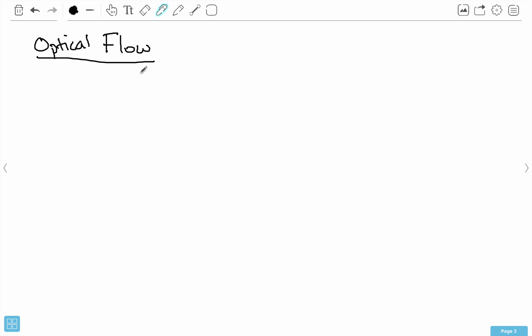It's a computer vision technique that is used to track the apparent motion of objects in a video. So using this technique of optical flow, we can actually find like a pixel value, or we can make this more generic to like an object and we can track it through the video.